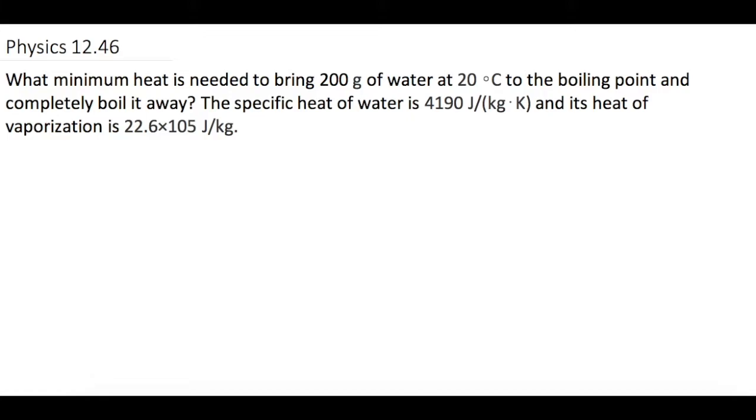What minimum heat is needed to bring 200 grams of water at 20 degrees Celsius to the boiling point and completely boil it away? The specific heat of water is 4190 joules per kilogram K, and its heat of vaporization is 22.6 times 10 to the 5th joules per kilogram.